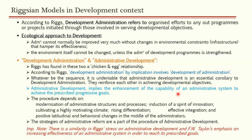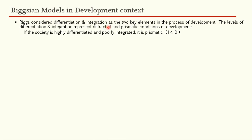Riggs considered differentiation and integration as the two key elements in the process of development. The levels of differentiation and integration represent diffracted and prismatic conditions of development. If the society is highly differentiated and poorly integrated, it is prismatic. In the prismatic model, integration is less than differentiation — I < D — meaning the society is not fully developed.